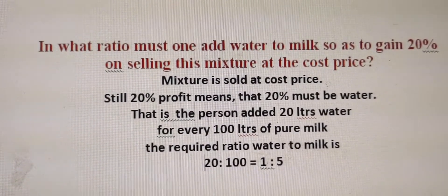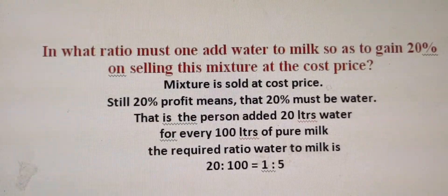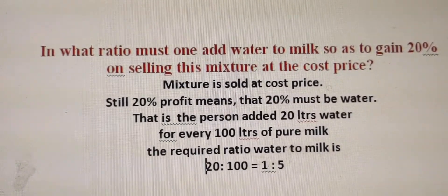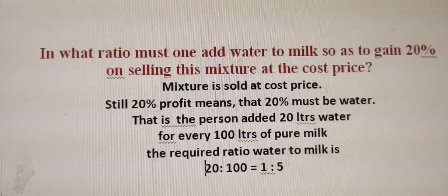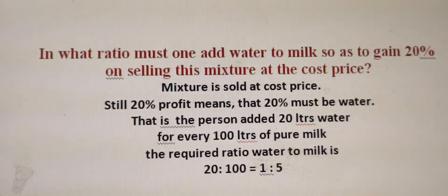That is, for every 100 liters of milk, 20 liters of water is added. So water to milk becomes 20 is to 100, that is equal to 1 is to 5.